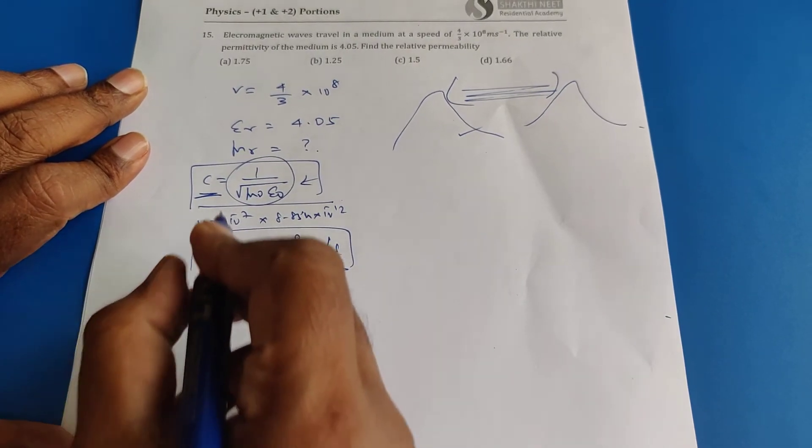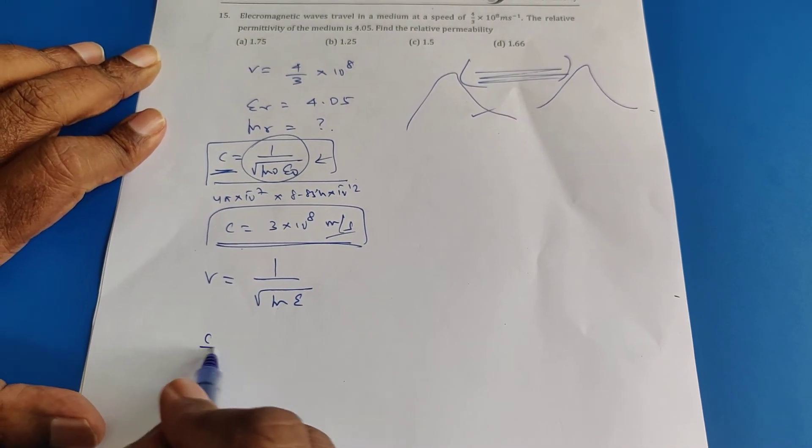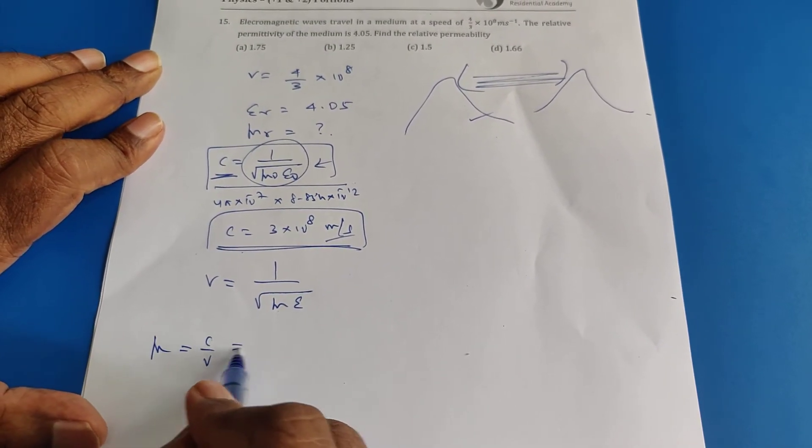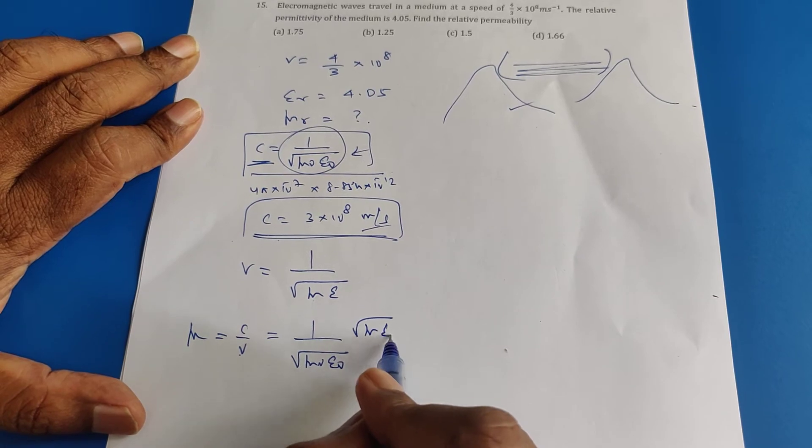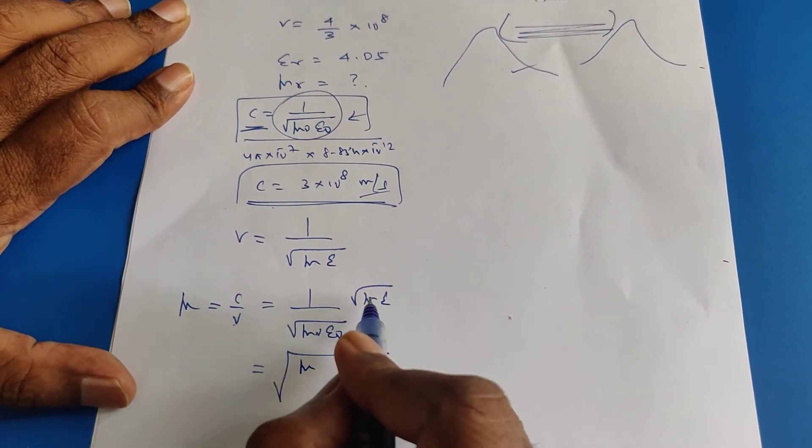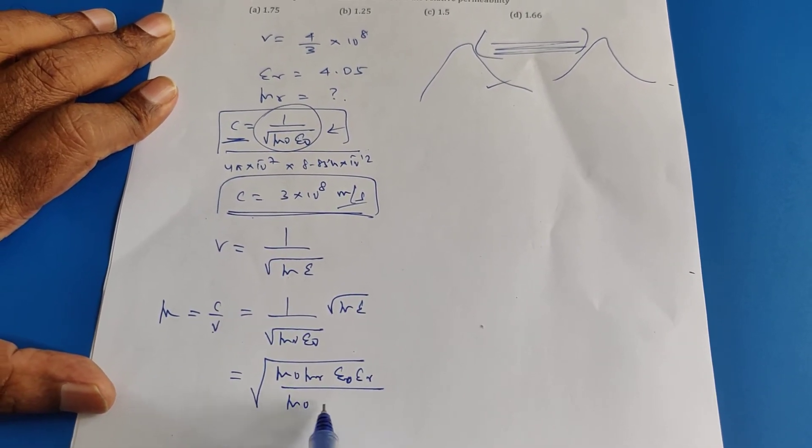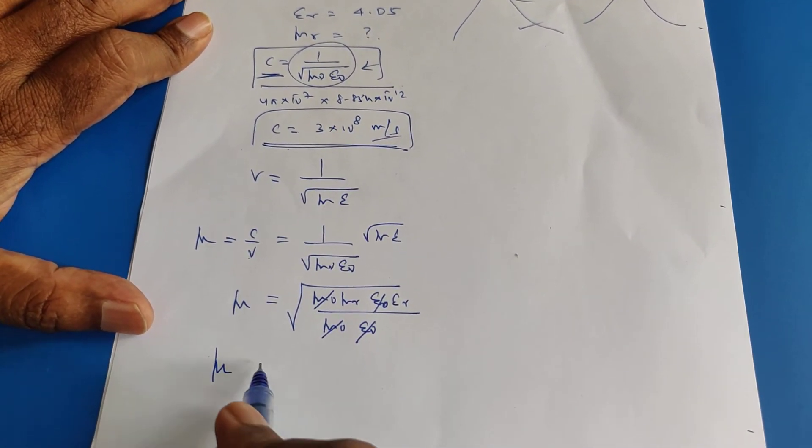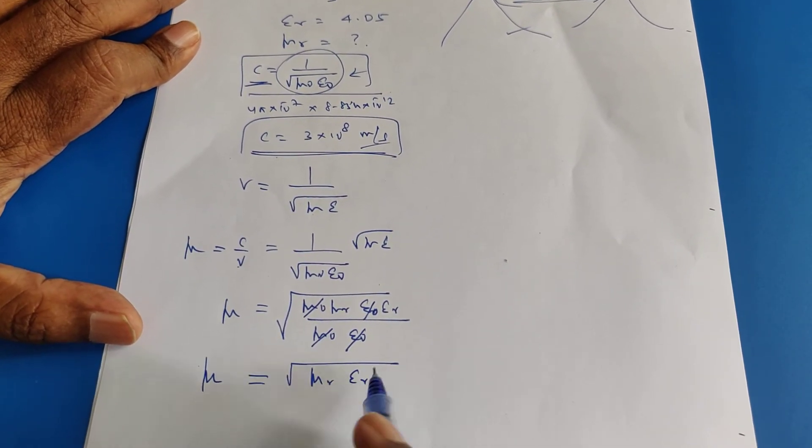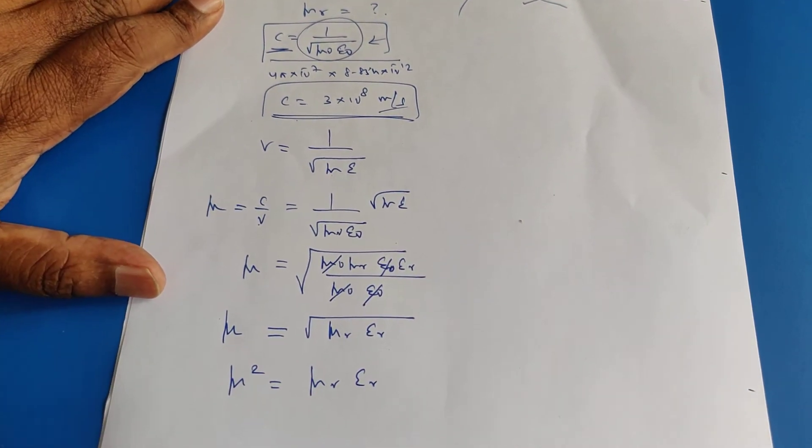Coming to this point, what is velocity of light inside a medium? It can be given by this formula. What is C by V? That is refractive index that can be written as, replace C by root of μ naught ε naught, replace V by root μ ε. What do you get? Under root μ is μ naught μ_r, ε is ε naught ε_r divided by μ naught ε naught. These things get cancelled and this side you have μ. Therefore, you get a formula μ equals root of μ_r ε_r. Square both sides, you get μ squared equals μ_r ε_r. This is the formula which has to be used in this problem.